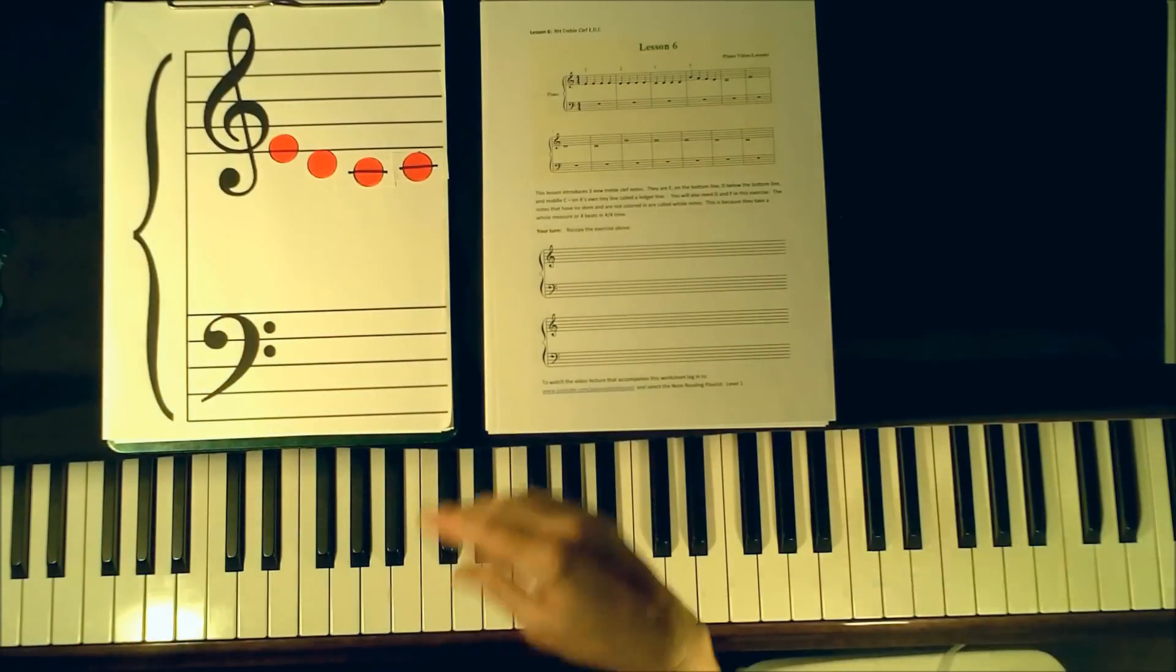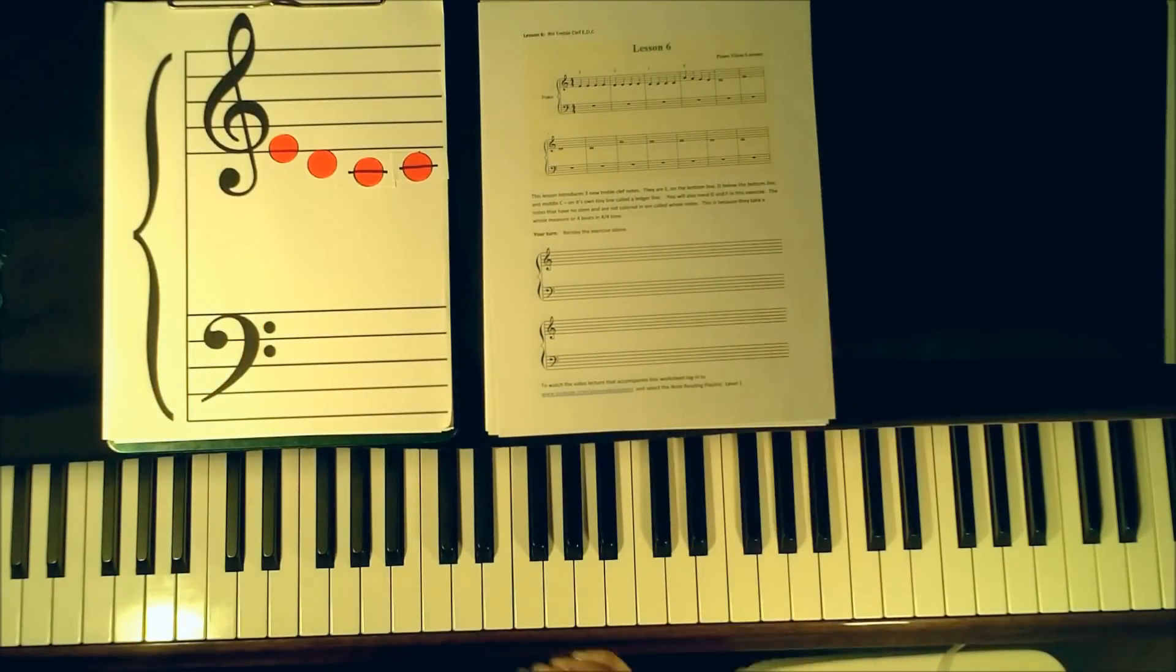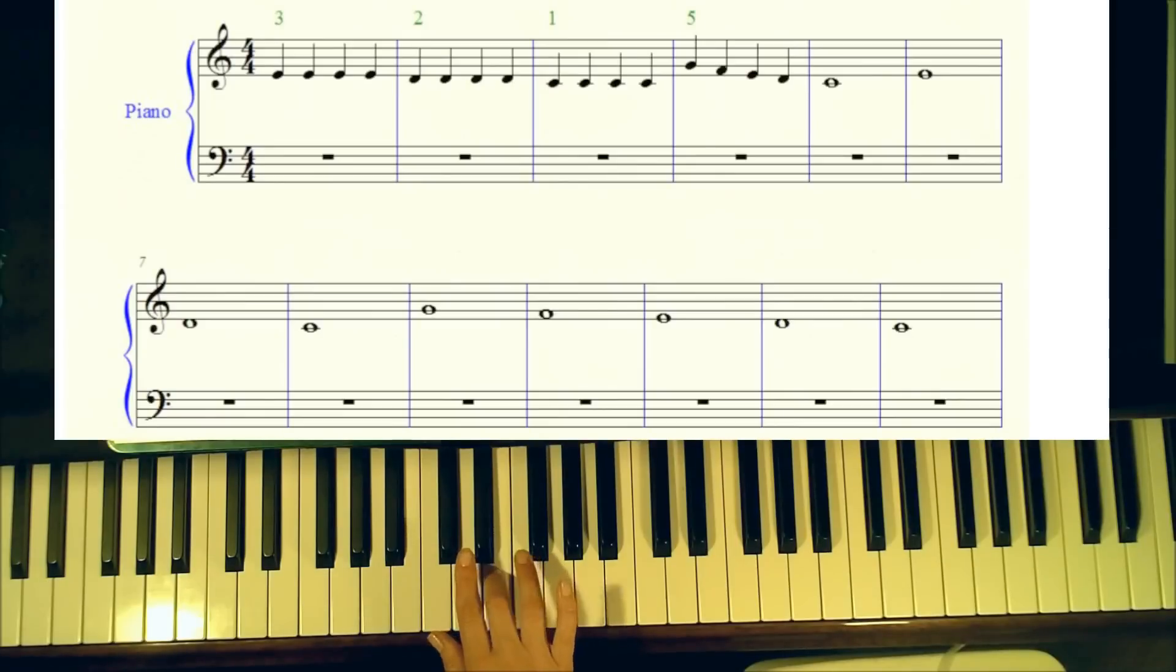All right, we're ready to try our exercise. So let's have a look at the sheet music. Notice in the fourth measure, we're going to be moving our fifth finger up to the note G, and it's going to play down from G to F. So prepare yourself to notice that as it comes up. And also at the end of the first line, notice the last two measures have notes in them that do not have a stick, and they're not colored in. These are called whole notes, and they hold for four beats, and they count for four beats in 4-4 time.